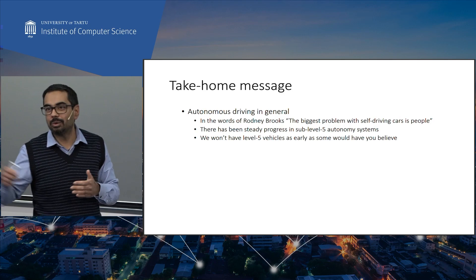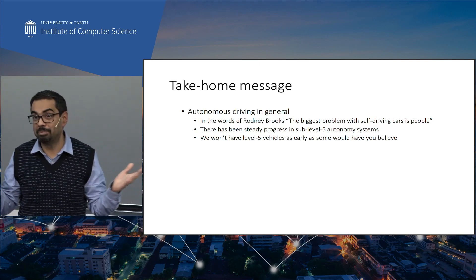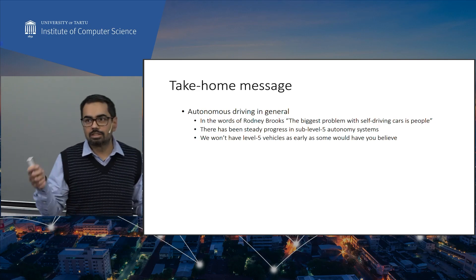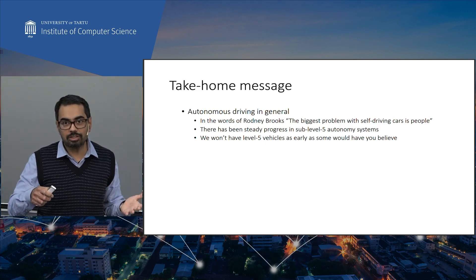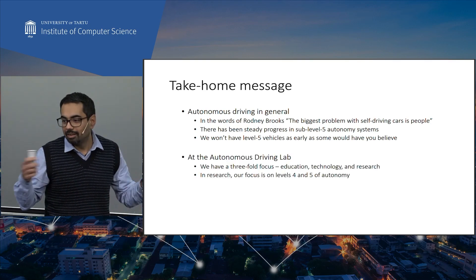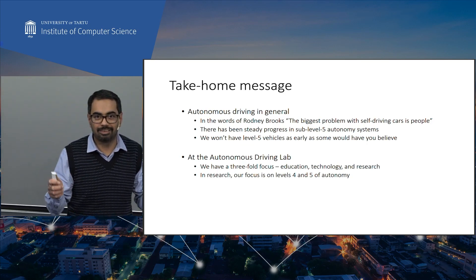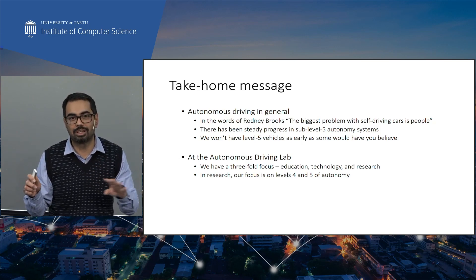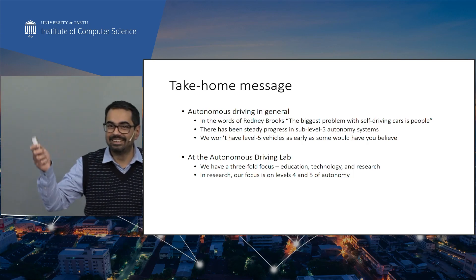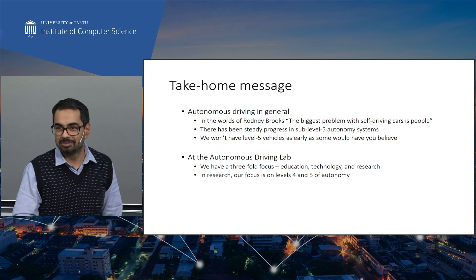The take-home message: the biggest problem holding back widespread deployment of autonomous vehicles is people — the uncertainty that comes with pedestrians and human drivers. There's significant progress in sub-level-five systems, but level five is far into the future. At the Autonomous Driving Lab, our focus is on levels four and five, with three pillars: education, technology, and research. You're very welcome to join us as thesis students or future engineers.